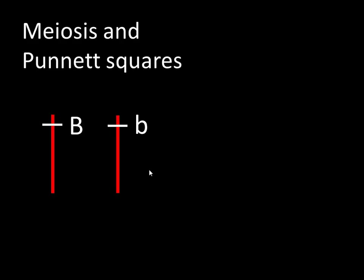When we're doing one-trait Punnett squares, we're assuming that those genes are on a homologous pair of chromosomes. I really want you to see the connection between the results of meiosis and the Punnett diagrams that we make, because the Punnett diagrams are really showing the different ways that gametes might combine.